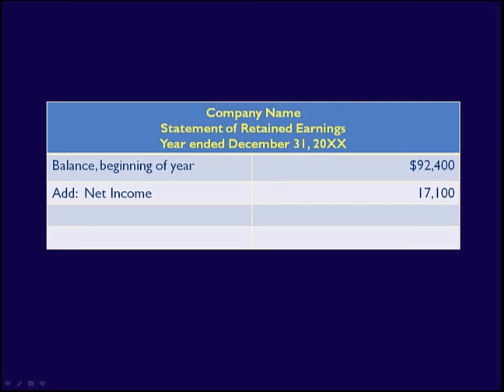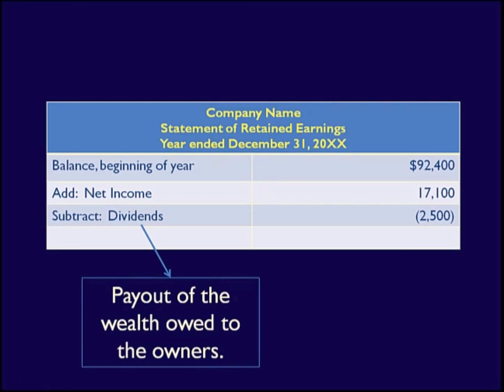This results in a subtotal of $109,500. Next, we deduct the dividends declared or paid to the owners. Dividends are a distribution of wealth to the owners by the business. Remember that the wealth of the business is owed to the owners, and dividends therefore reduce retained earnings and, by extension, equity.